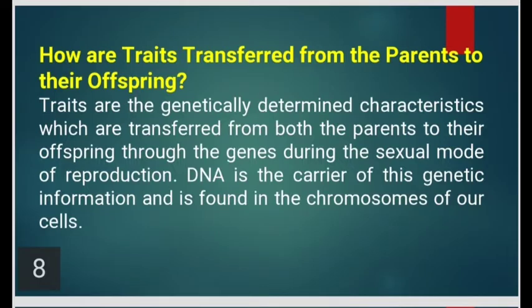How are traits transferred from the parents to their offspring? Traits are the genetically determined characteristics which are transferred from both parents to their offspring through the genes during the sexual mode of reproduction. DNA is a carrier of this genetic information and is found in the chromosomes of our cells.